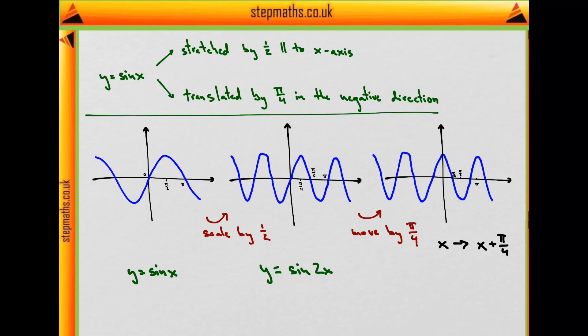It's always something worth remembering that when you move by a certain amount to the negative direction, you transform from x to x plus that, and if you move to the right-hand side, you get x minus the amount by which you move. It's exactly the other way around than maybe you would assume.